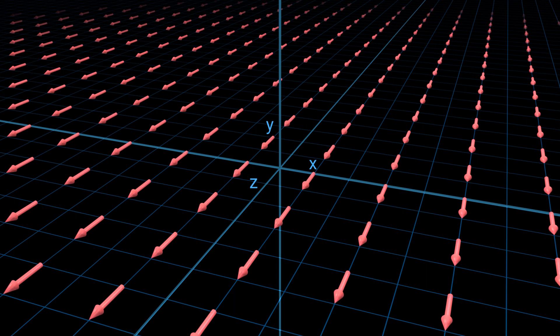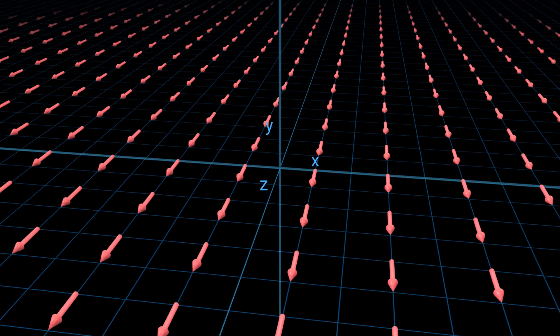This is an electric field. Such a field is represented by a vector field. Each point in space has a vector defining the magnitude and direction of the field at that point. We're drawing only those on the X-Z plane, where most of the action is going to be.